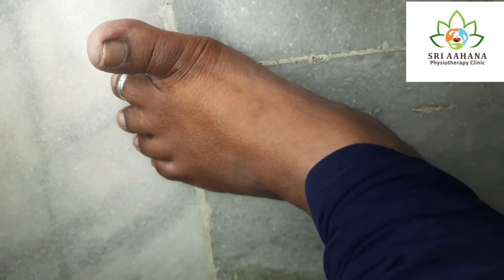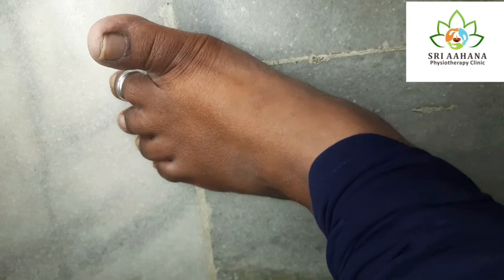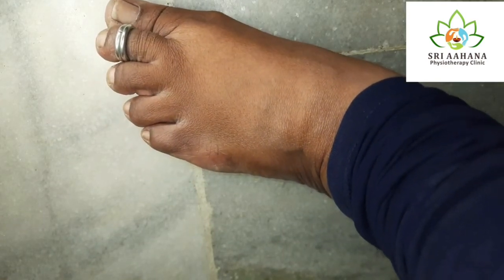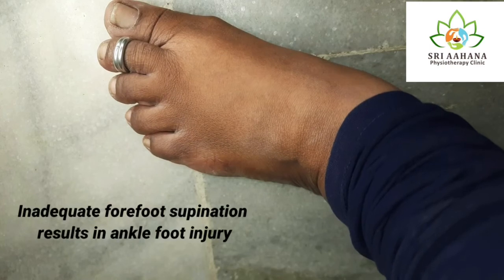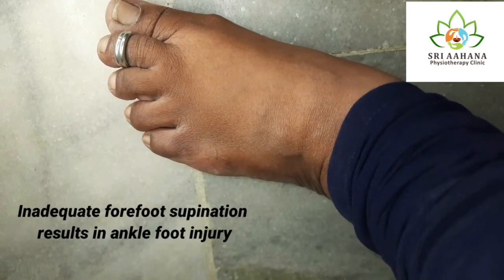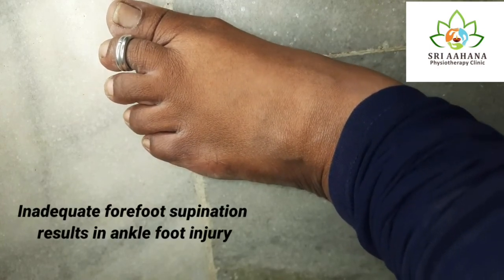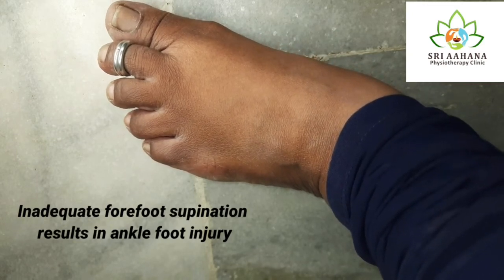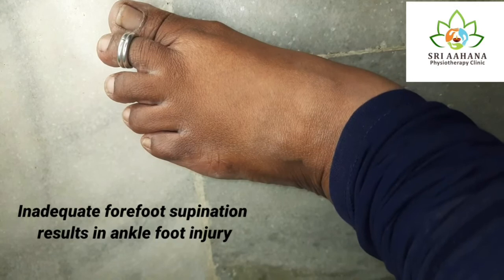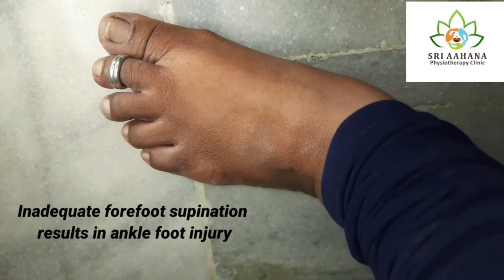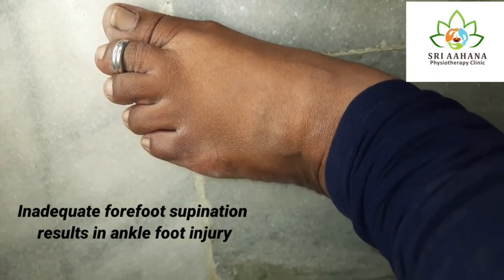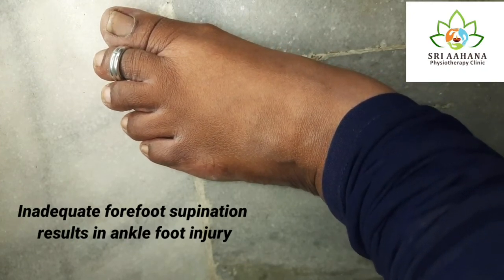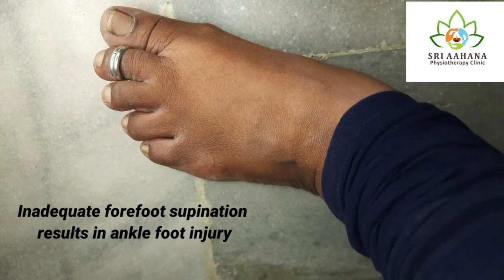When the hind foot pronation is strong enough and the forefoot supination is not sufficient to compensate this, what would happen is the medial aspect of the foot will press to the ground and the lateral aspect will lift off. This causes an instability in the ankle joint and will lead to fall. This is why supination twist is important.